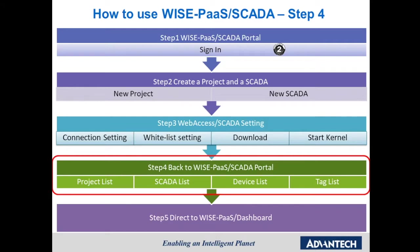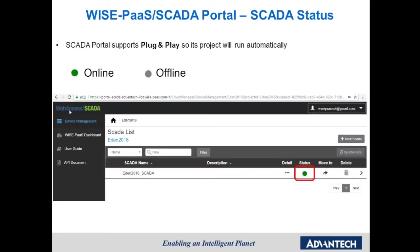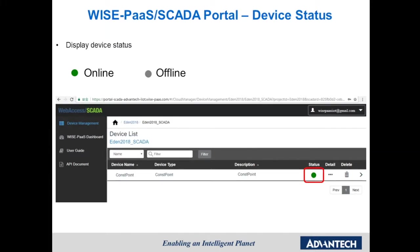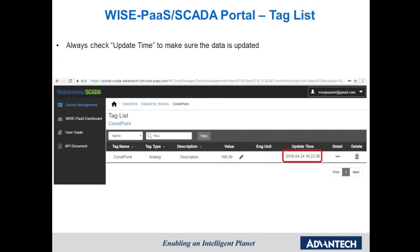Step 4 is to go back to the WISE-PaaS SCADA portal. Because SCADA portal supports plug-and-play, the project node and SCADA node you created in WebAccess SCADA will be uploaded to the WISE-PaaS SCADA list automatically. In the SCADA list, it will show the status of all SCADA nodes. Click into one SCADA node to see the device list showing the status of all devices. Select one device and check the tag list — the tag value and last update time will be shown.